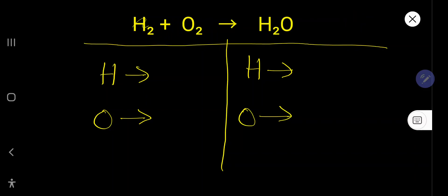How to balance H2 + O2 that produce H2O. On the left hand side, the number of hydrogen is 2 and the number of oxygen is 2. On the right hand side, the number of hydrogen is 2, but the number of oxygen is 1.